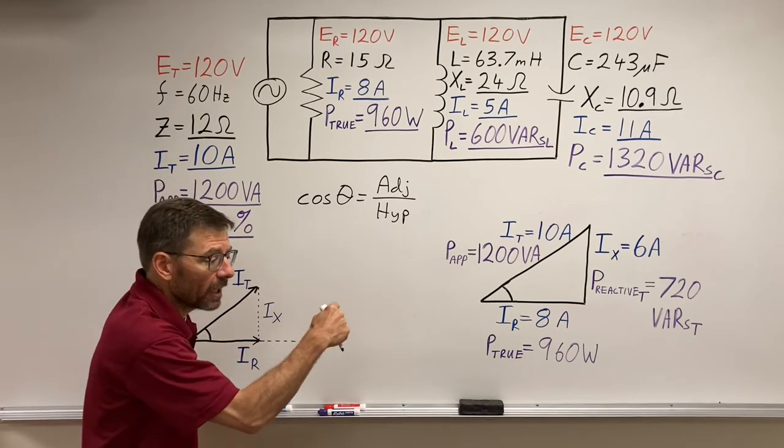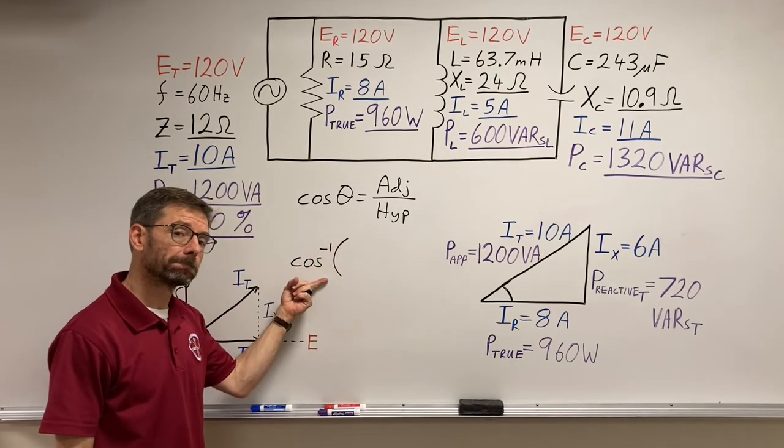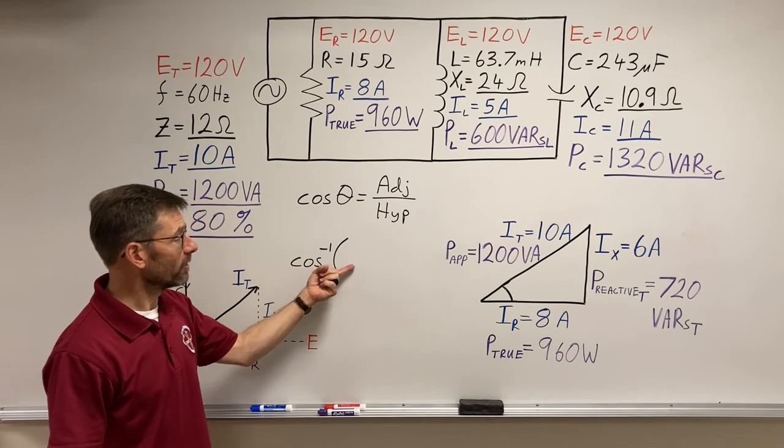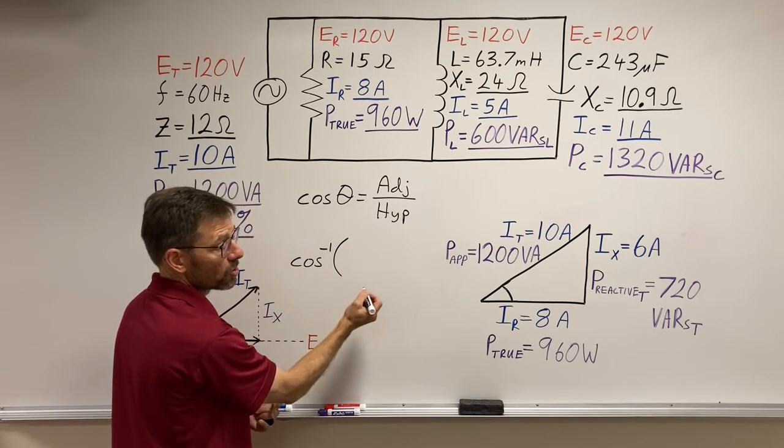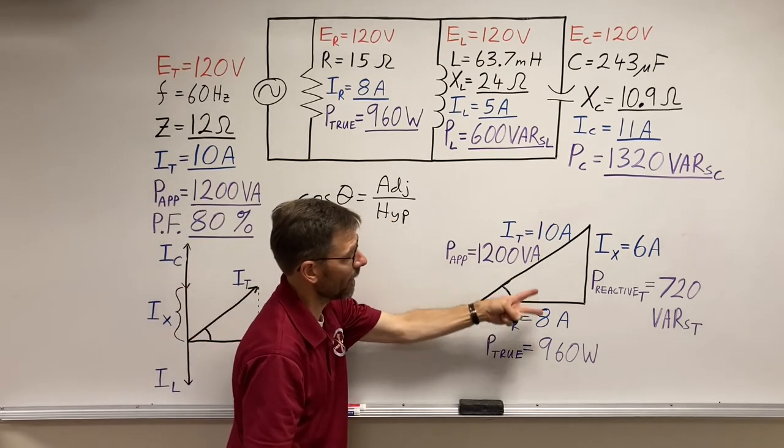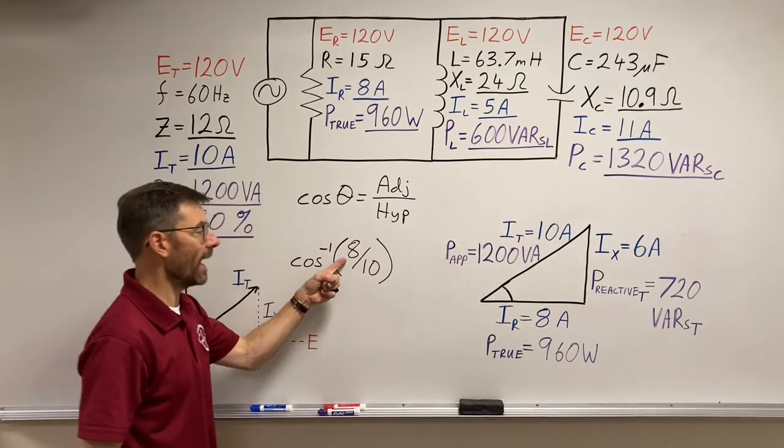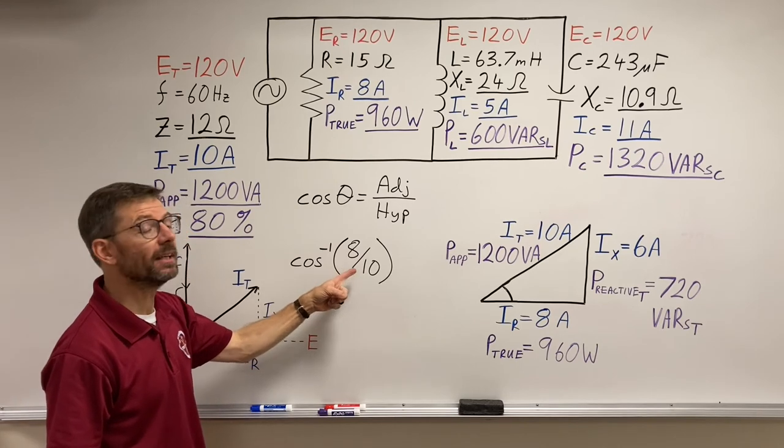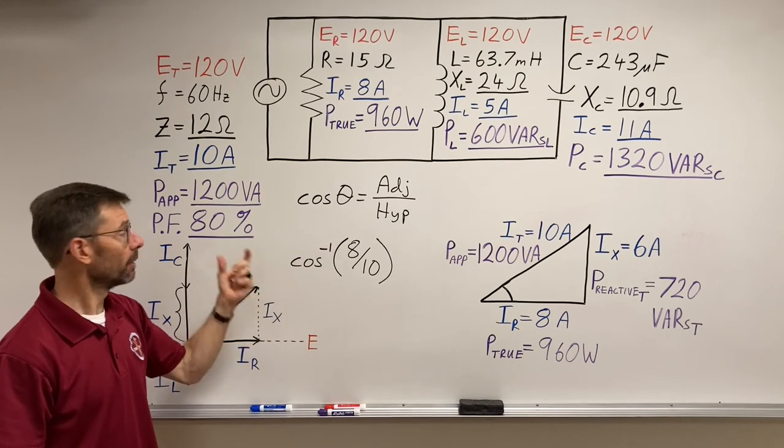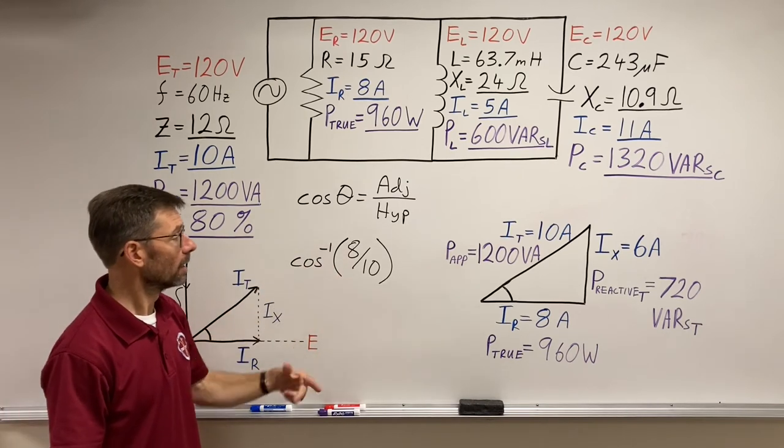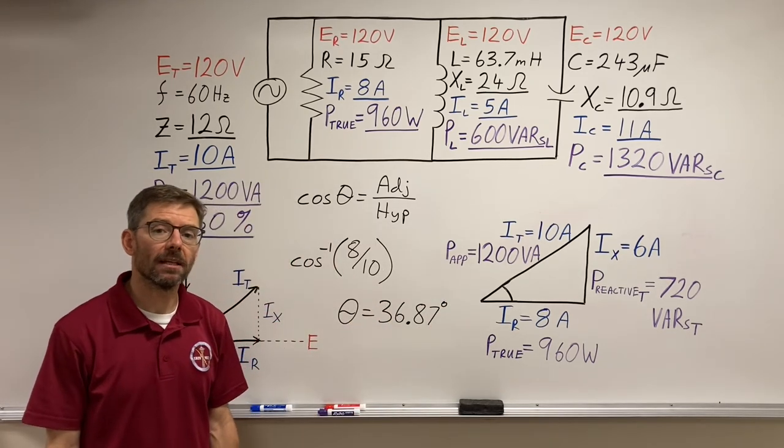Or in a calculator, hit second function cosine, and this is what it'll look like. That's what you'll get. And what do you put in there? You put the ratio in there. Adjacent over hypotenuse, which is basically this side over this side. We'll do it with the smaller numbers. You can do 8 divided by 10, or you could have just put 0.8, which is really what 80% is. You could just put your power factor in there, but in decimal format, 0.8. And hit equals, what do you get? 36.87 degrees.